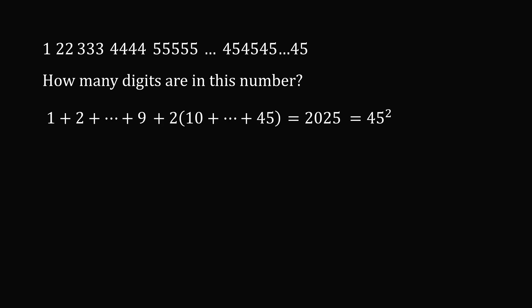So if you write the numbers 1 one time, 2 two times, 3 three times and so on all the way up to 45 45 times, you exactly get the number has 2025 digits which is equal to 45 squared. What an incredible property.